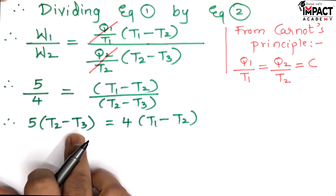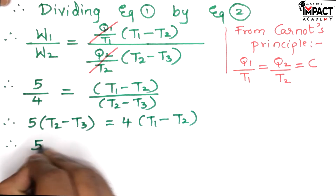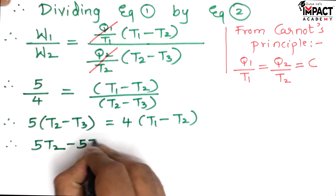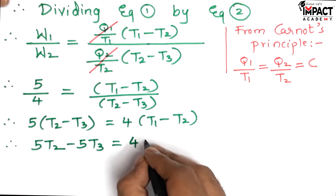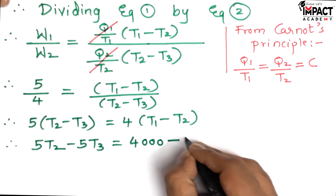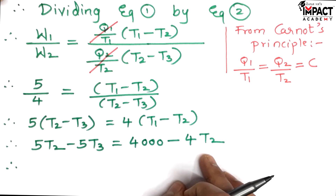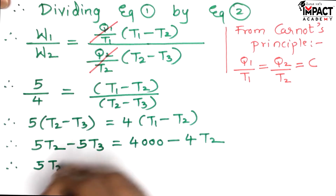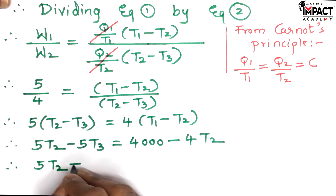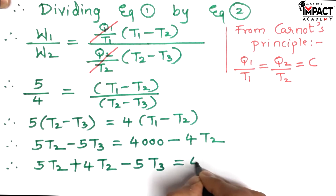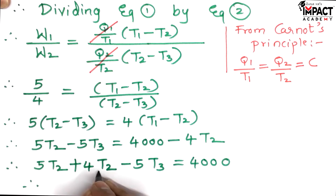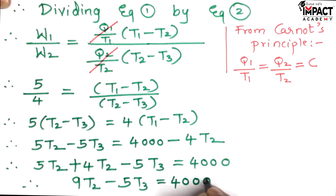Cross-multiplying and substituting T1 = 1000 Kelvin: 5(T2 - T3) = 4(T1 - T2), which gives 5T2 - 5T3 = 4000 - 4T2. Rearranging, we get Equation A: 9T2 - 5T3 = 4000.